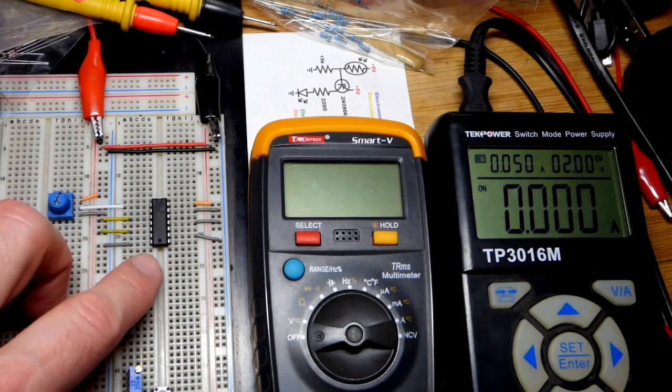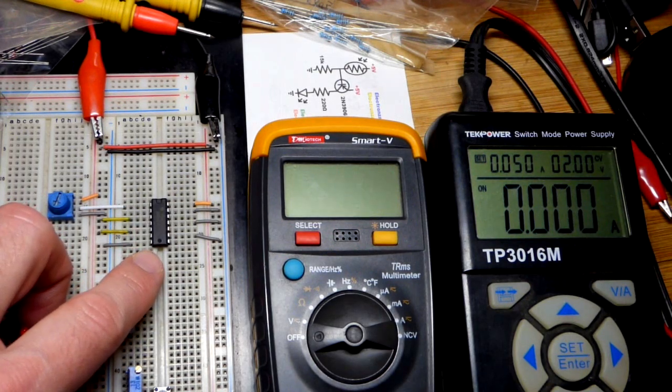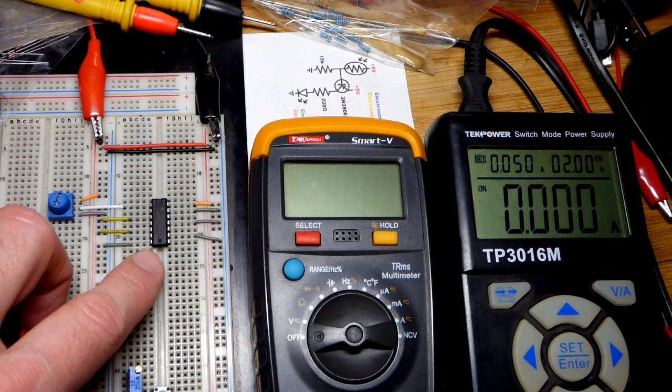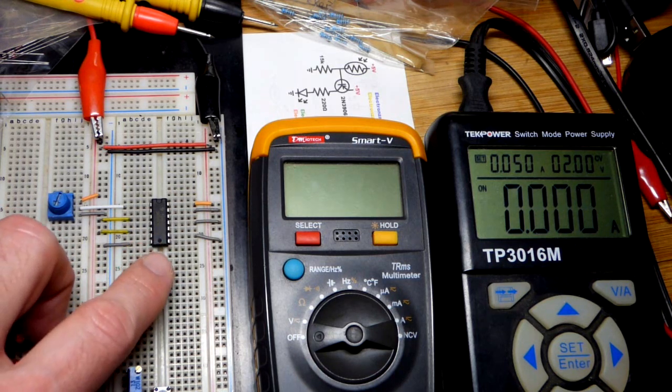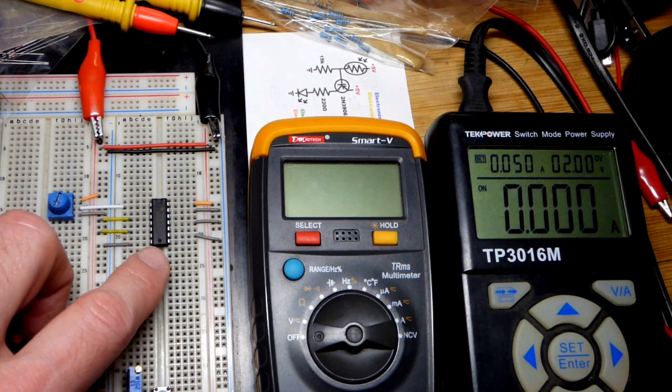So now in this video we're going to do a quick test of the high-speed CMOS version of the 7414. So that is the 74HC14 integrated circuit there. HC stands for high-speed CMOS.